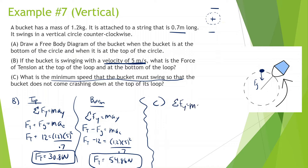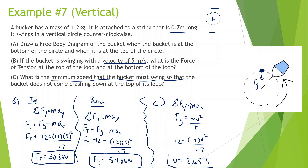Sum of all forces in the y equals mass times centripetal acceleration. The only force in the y is force of gravity because there's barely any tension. That equals mass times velocity squared over r. Force of gravity is 12, mass is 1.2, velocity is what we're looking for, radius is 0.7. So: square root of 12 times 0.7 divided by 1.2, and we get 2.65 meters per second. If the bucket was swinging slower than this, the bucket would fall down. If the bucket was going faster than this, it'd go around in a circle but there would just be more tension.